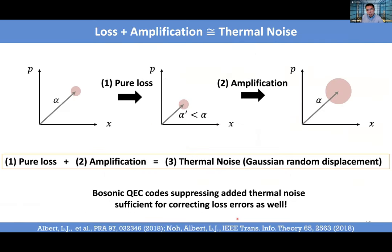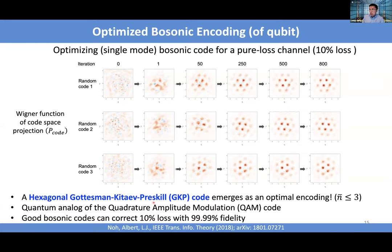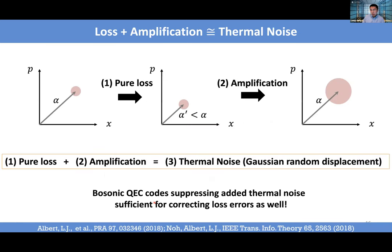One might ask: the GKP code was originally designed to correct added thermal noise — why does it work so well for correcting loss errors, which is a very different error model? The underlying reason is a connection between loss errors and added thermal noise. If you have a coherent state undergoing loss, you can perform phase-sensitive amplification to restore the original amplitude with added thermal noise. This effectively maps a loss channel with amplification to a thermal noise channel with added random displacement, which GKP is precisely designed to correct. That's why GKP, even though originally designed for a different error model, performs well for loss errors too.